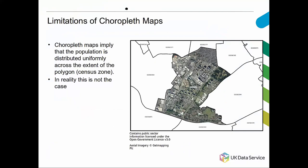Choropleth maps are not without problems because they tend to apply the population as if distributed uniformly across the extent of the polygon — the census zone. You can see here we've got a bunch of polygons, and I've overlaid on top an aerial photograph. Within the actual real world you have areas of residential use here, and over here areas of parkland and sports facilities where there are no actual people. Whereas if you were creating a choropleth map and shaded it all red, that would imply there are people right across the entire zone — which misrepresents reality.